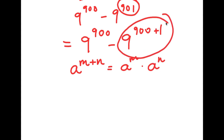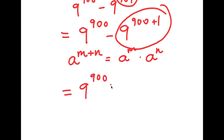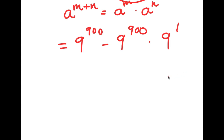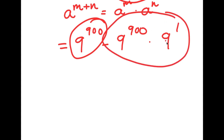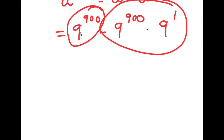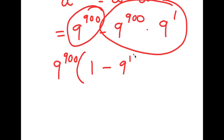So we can rewrite 9 to the power of 900 plus 1 as 9 to the power of 900 times 9 to the power of 1. Now, both terms have 9 to the power of 900, so we can factor that out. We get 9 to the power of 900 times open parenthesis 1 minus 9 to the power of 1 close parenthesis.